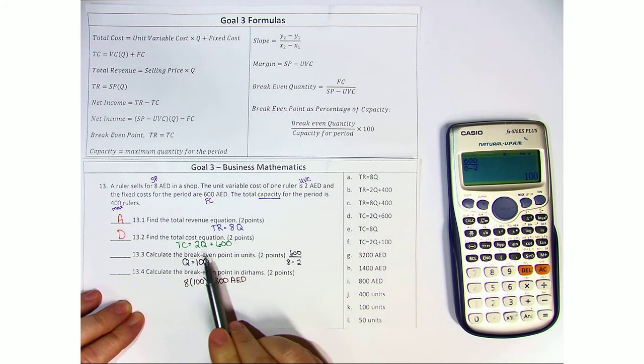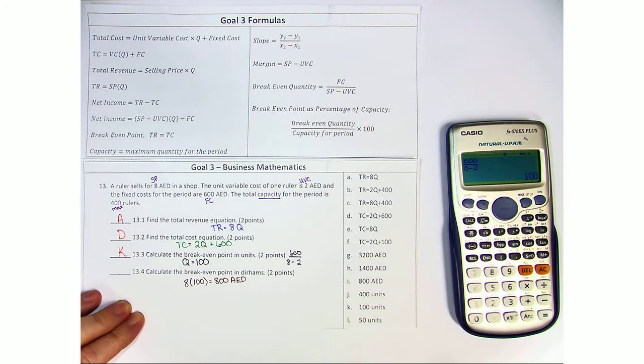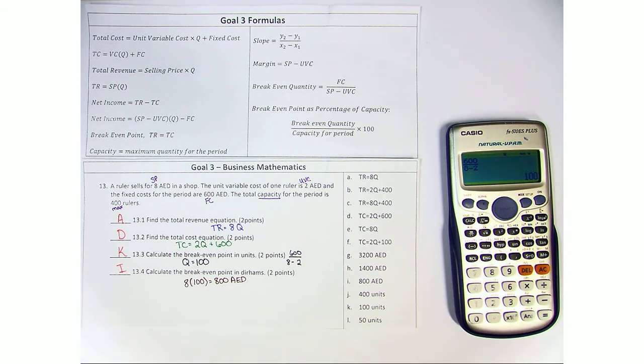Calculate the break-even point in units. Well, right here, K is 100 units. And calculate the break-even point in dirhams, 800 dirhams, or 800 AED.